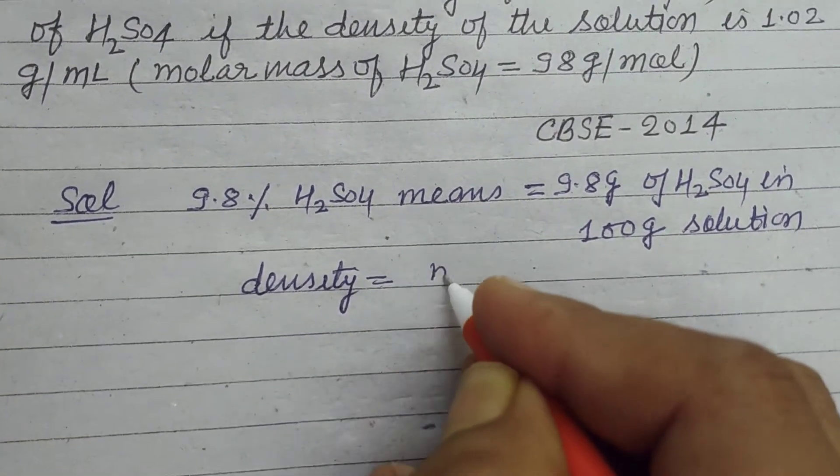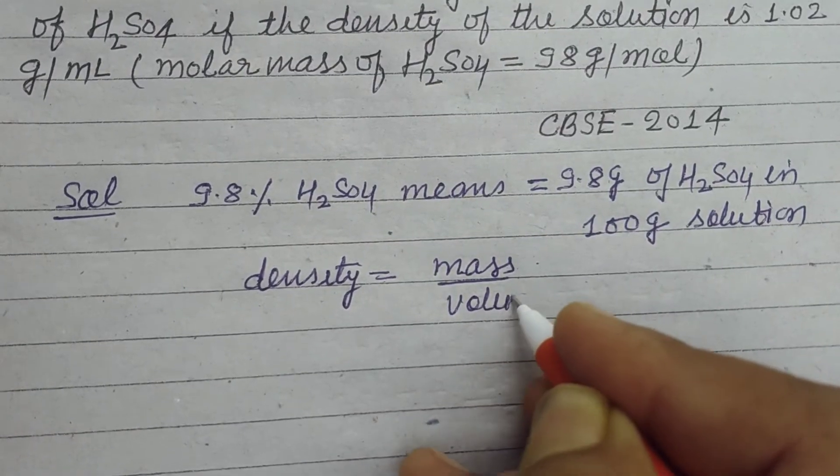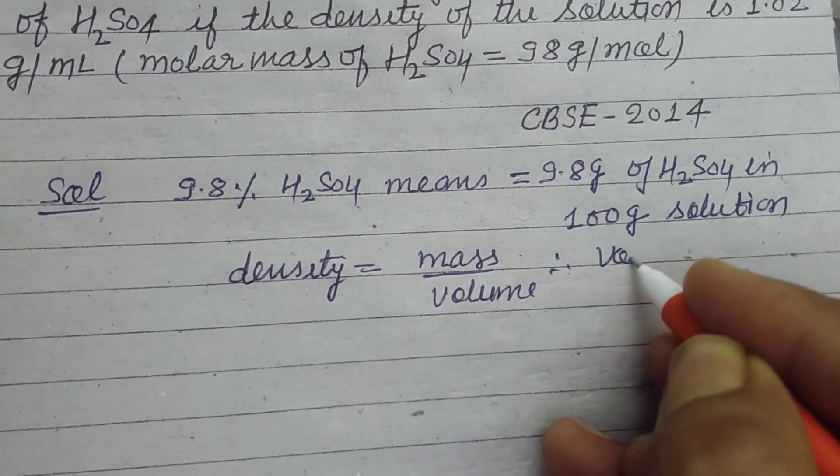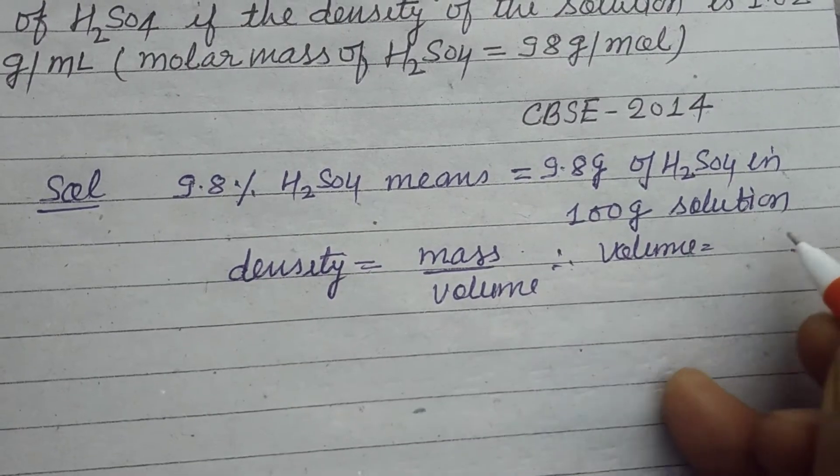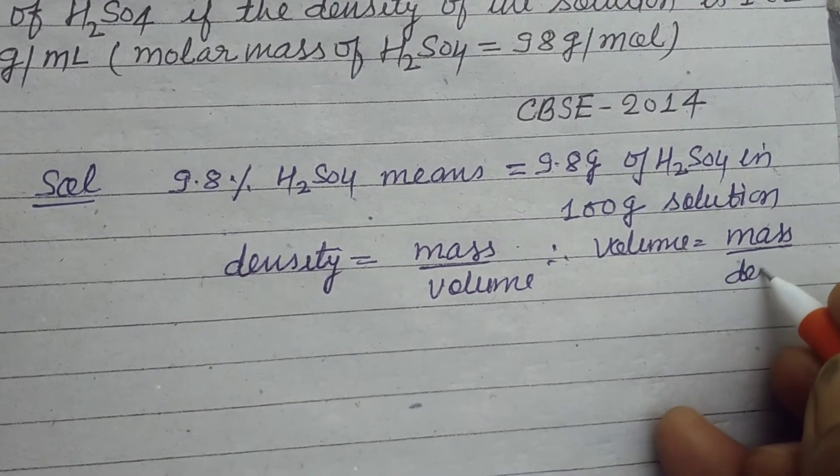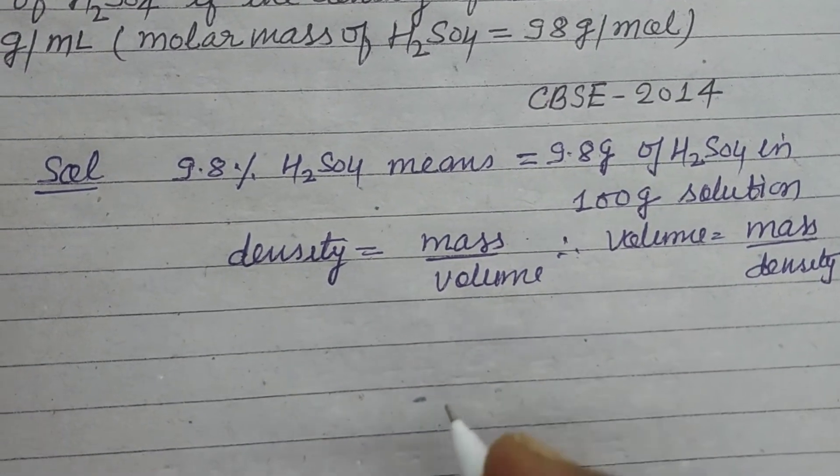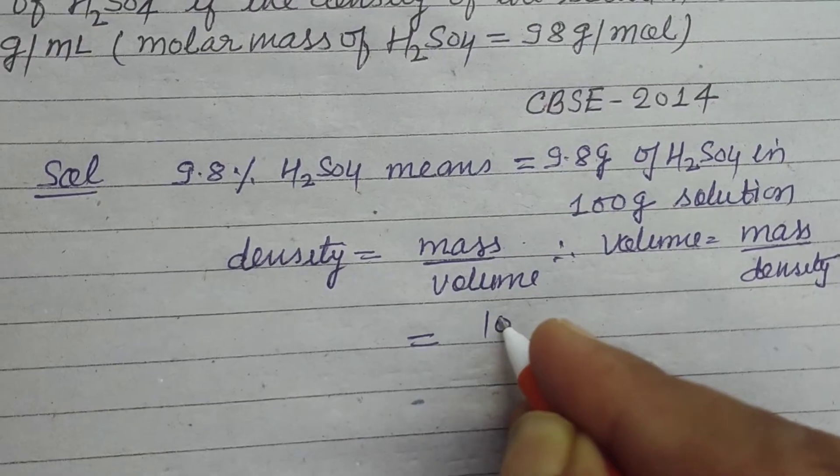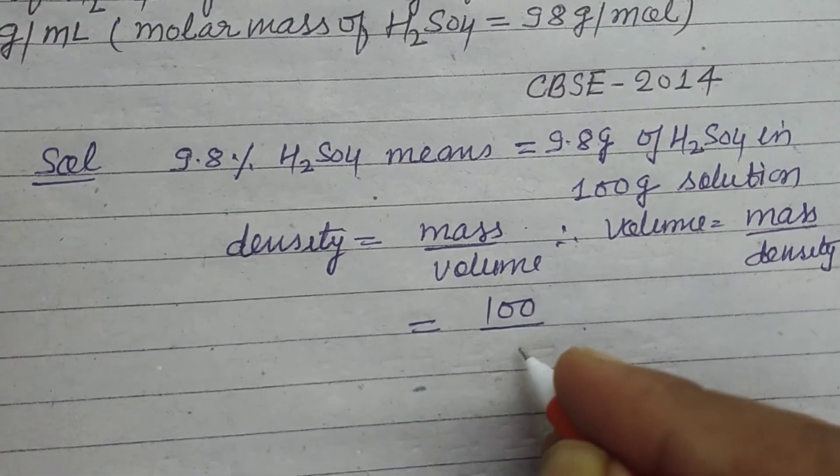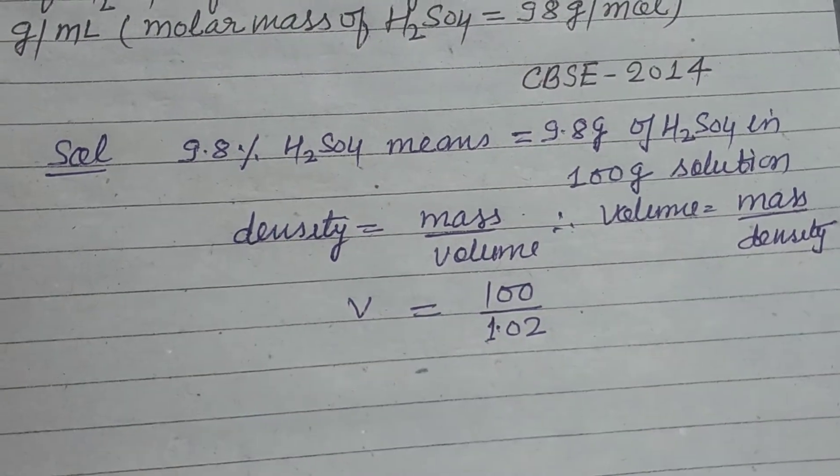Now density, you know that density equals mass over volume. Therefore, volume equals mass over density. So mass of solution is 100 grams and density is 1.02, so this is the volume of the solution.